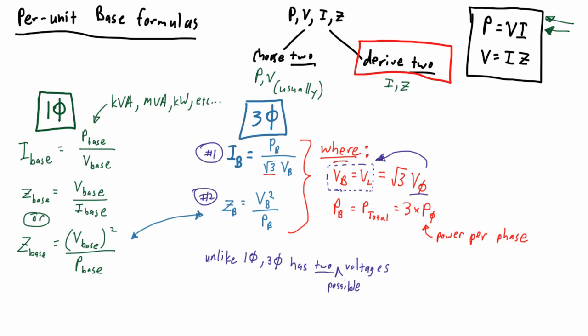The same is true for power. If you're using phase power, you need to convert that over to total power. So these two formulas are very simple and easy to remember, but you need to understand that they don't work in every single case. They only work when you use line and total values as your chosen basis.